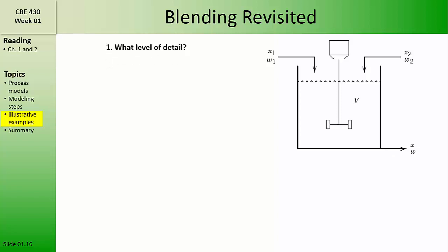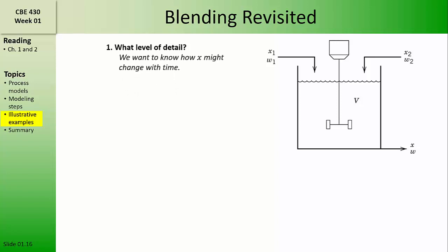First, we need to answer the question: what level of detail do we need? What are the modeling objectives, and what kinds of questions do we want the model to answer? Let's suppose we want the model to tell us how x might vary or change with time, x being the composition of the effluent stream. Then, we need to draw and label a schematic, using symbols for important process variables that might appear in our model equations. This is already done for us.